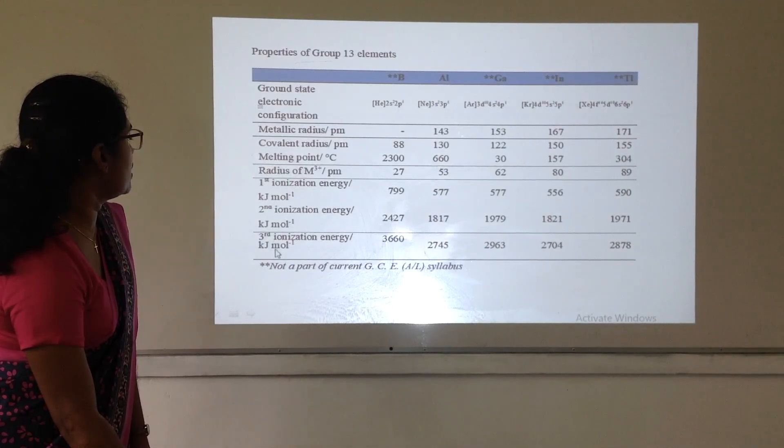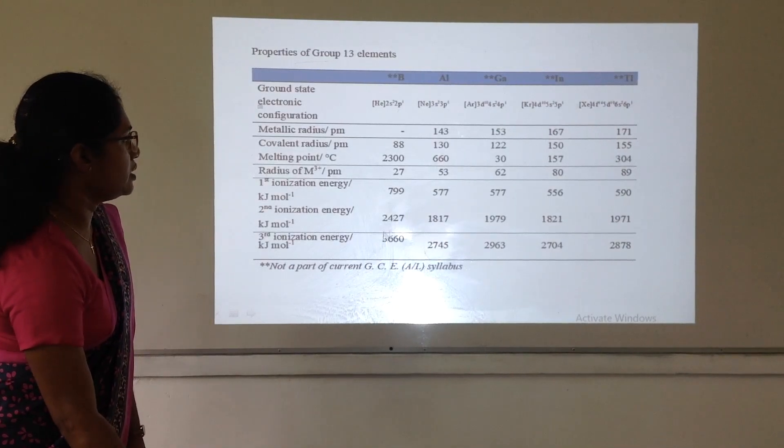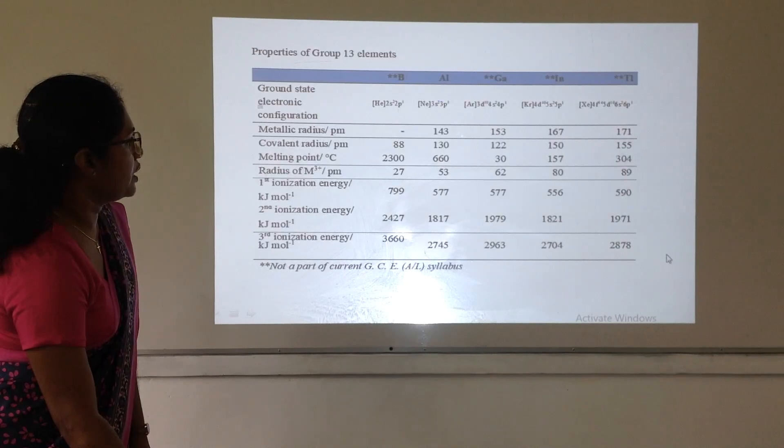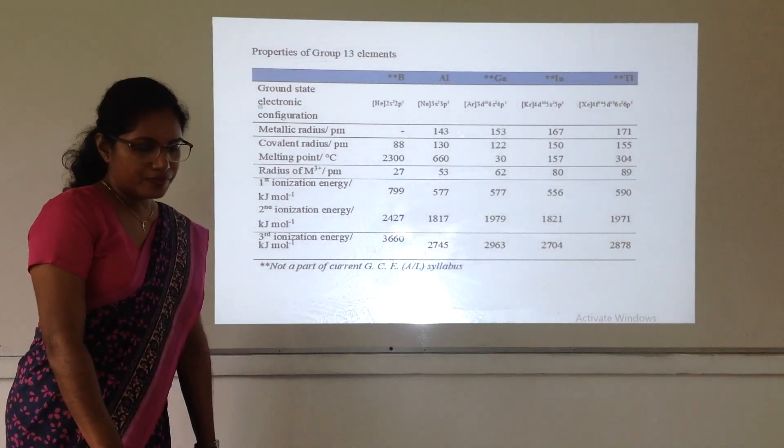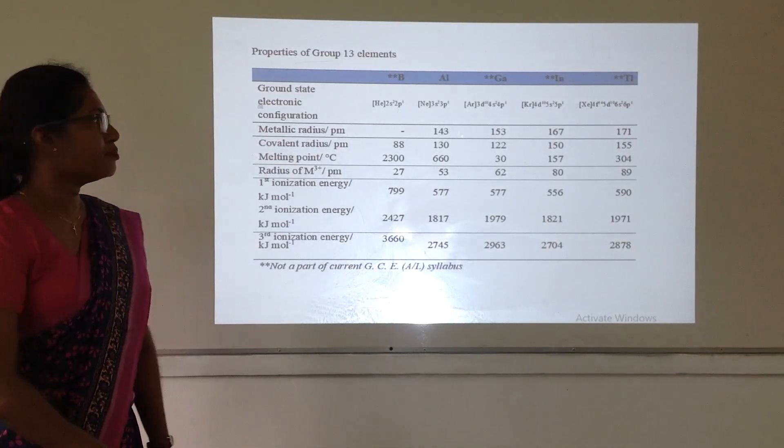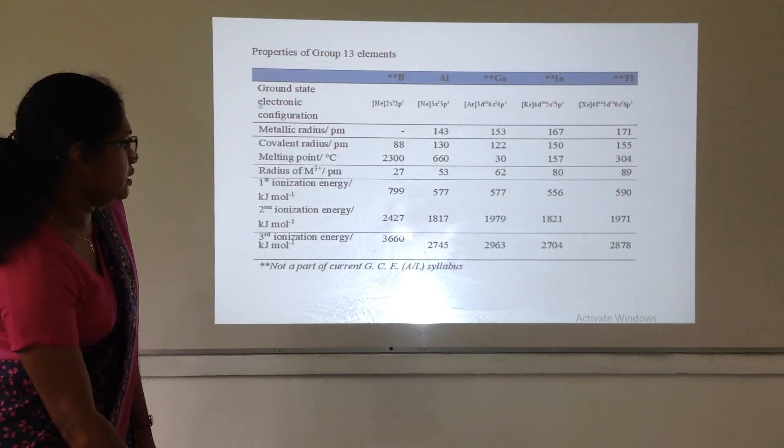And that is the reason for the lowest melting point of gallium. And radius of M3+ ion also increases. First, second and third ionization energies decrease. So, you should know this gradual increasing and decreasing patterns of group 13.